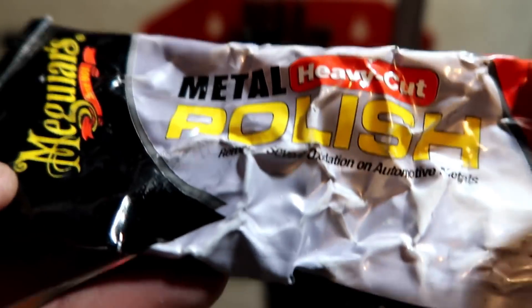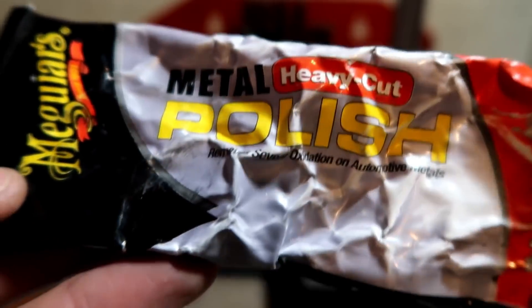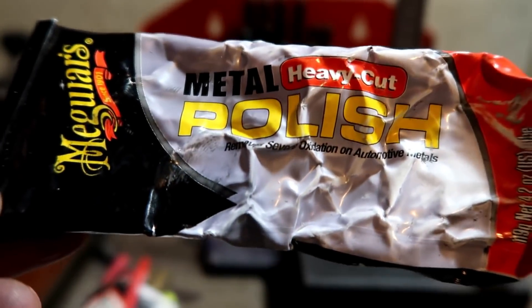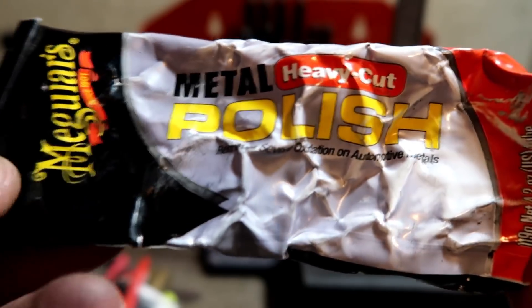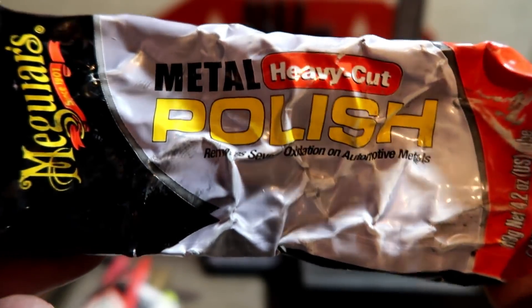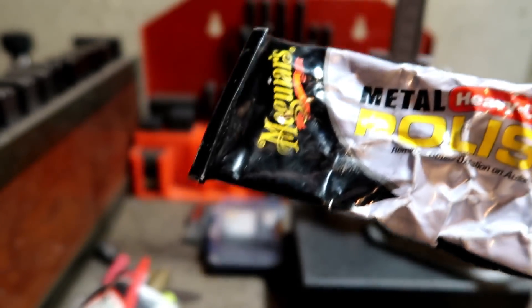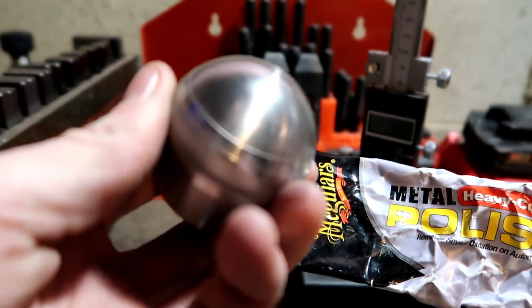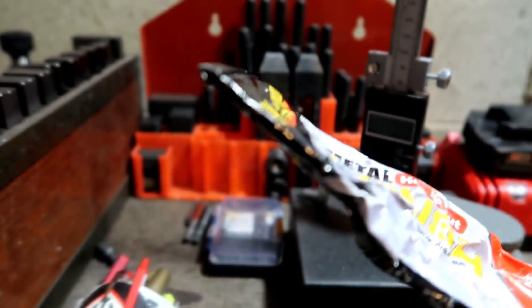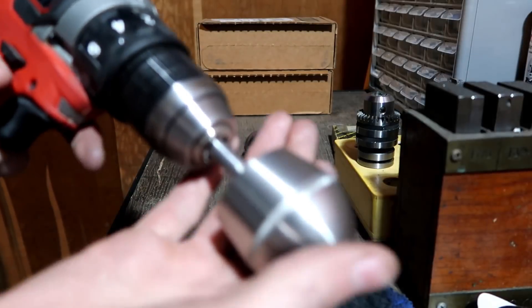So I usually use this metal polish for rims on my car, just getting some oxidation off and all that stuff. But I found that it works really well polishing stuff like the bent shift extensions that I make, and it actually polished this one fairly well, so I'm just going to continue to use that stuff.